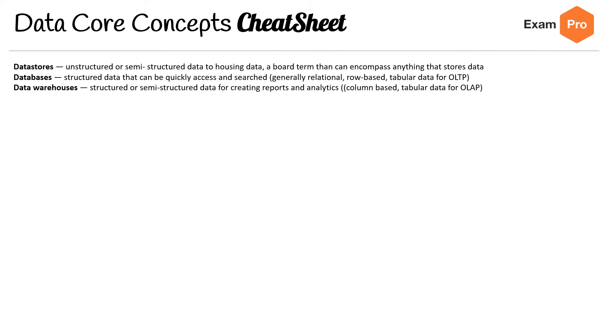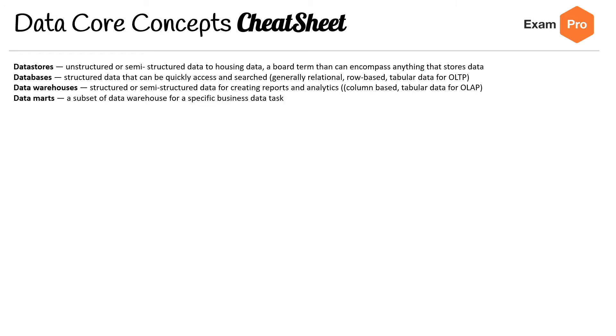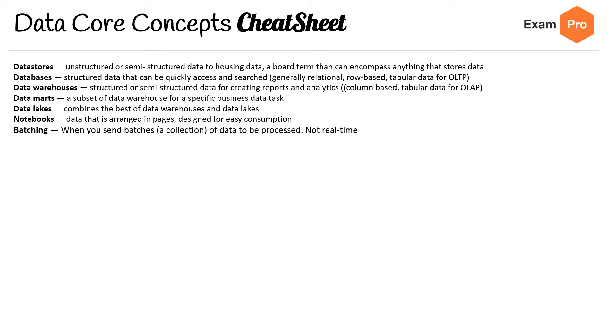Moving to the second page — data stores: unstructured or semi-structured data for housing data, a broad term encompassing anything that stores data. Databases are structured data that can be accessed quickly and searched — generally relational, row-based tabular data for OLTP. Data warehouses use structured or semi-structured data for reports and analytics — columnar tabular data for OLAP. Data marts are a subset of a data warehouse for specific business data tasks. Data lakes combine the best of data warehouses and data stores. Batching sends collections of data to be processed not in real time; streaming processes data as soon as it arrives.